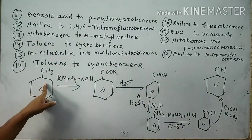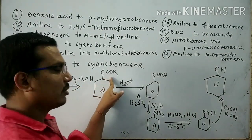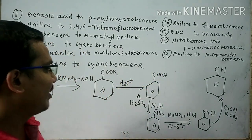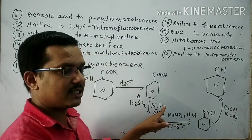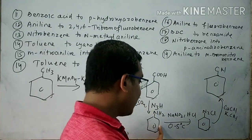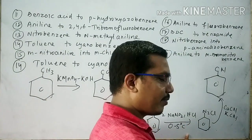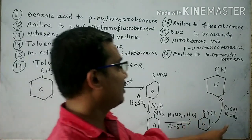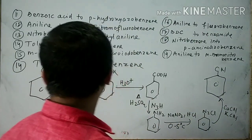To repeat: toluene undergoes oxidation with alkaline KMnO4; the potassium salt of benzoic acid is formed, which gives benzoic acid on acid hydrolysis. Benzoic acid reacts with hydrazoic acid in presence of H2SO4 to give aniline. Aniline reacts with NaNO2 and HCl at 0 to 5 degrees centigrade to form BDC. BDC reacts with CuCN dissolved in KCN to give cyanobenzene.